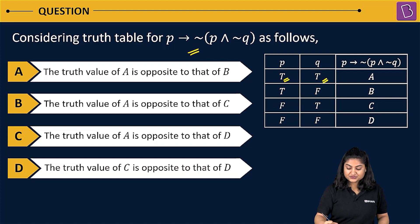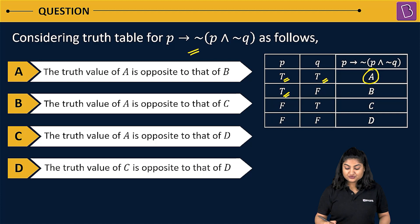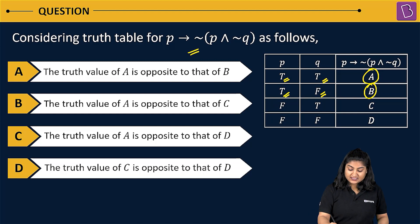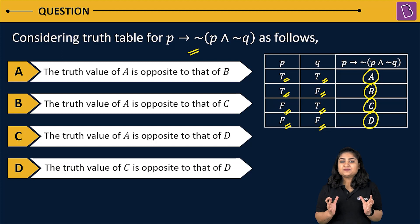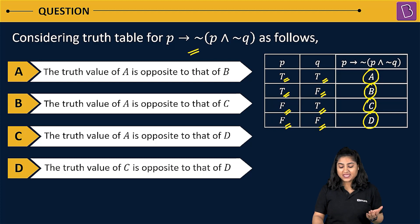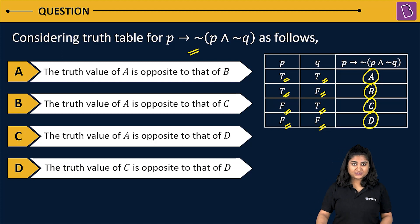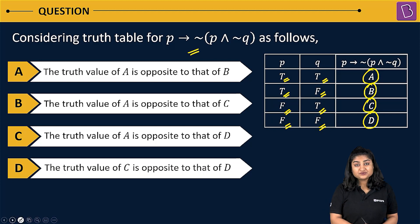When P is true and Q is true, the truth value of the Boolean expression is A. If P is true and Q is false, it is B. If P is false and Q is true, it is C. And if P is false and Q is false, it is D. After solving by calculating values of A, B, C, and D, we have to check which of the four options is correct.